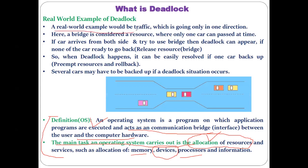Let's take a real-world example of traffic. Consider a narrow bridge that allows only one vehicle to pass at a time — traffic can go only one direction at a time. This bridge can allow only one car to go from one side to the other side at a time.